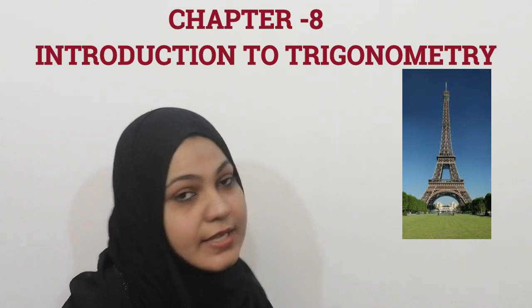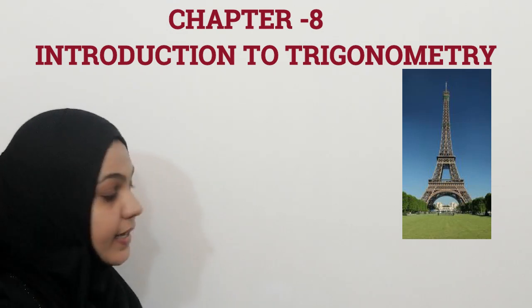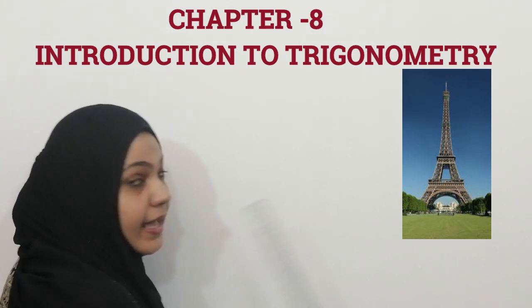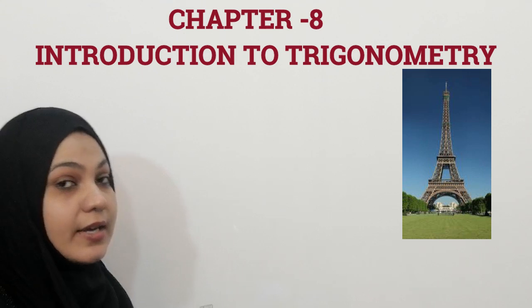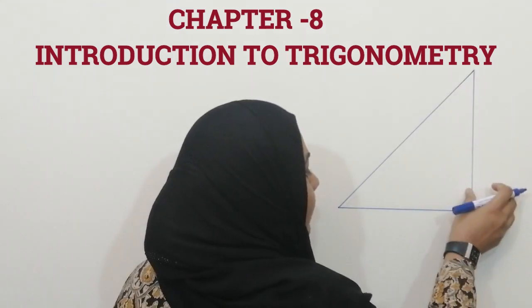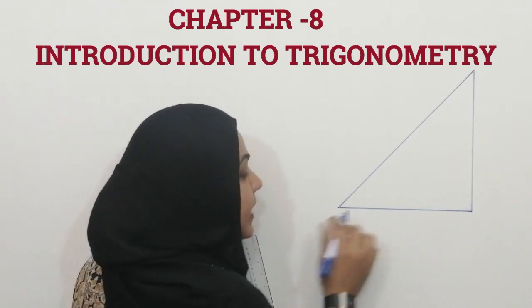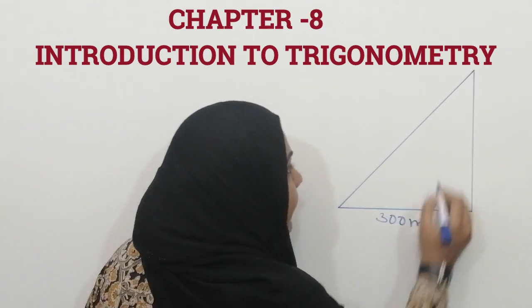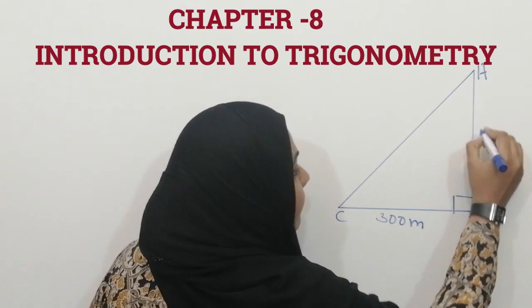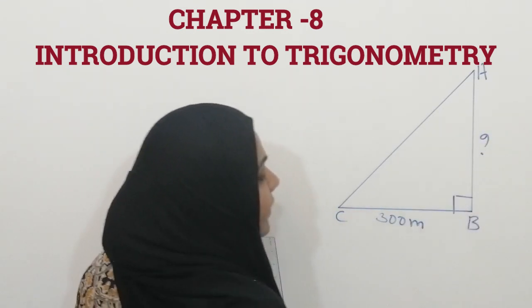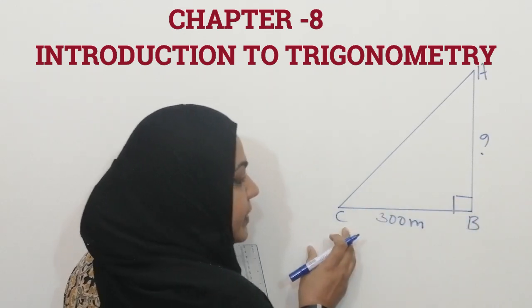Now we can check the height of this tower. You can see this is the tower and this is its height. I am standing here, and this is the horizontal distance between the tower and where I am standing. First, you have to find that horizontal distance. I am giving the triangle a name: ABC, with a right angle at B. AB is the height of the tower, and BC is the horizontal distance — suppose this is 300 meters.